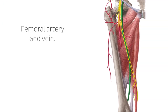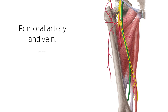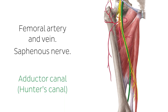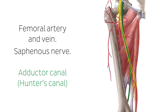Both the femoral artery and vein, as well as the saphenous nerve, proceed within a groove between the adductor magnus, adductor longus, and vastus medialis muscles. This so-called adductor canal, also known as the hunter's canal, is ventrally covered by the vastoadductorial membrane. Distally, it ends between the fleshy and tendinous insertion of the adductor magnus and leads to the popliteal fossa.